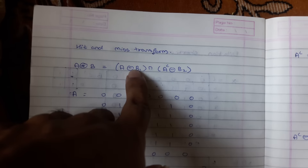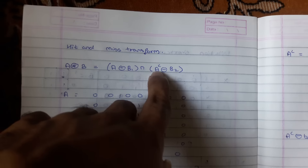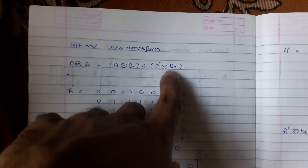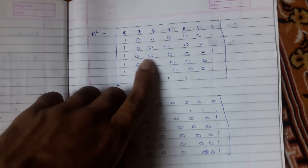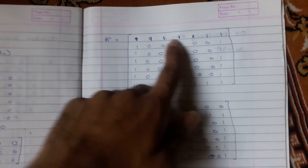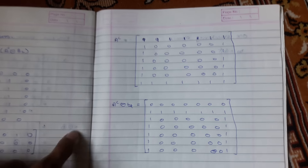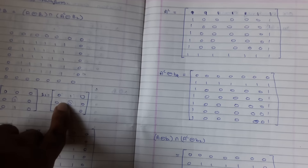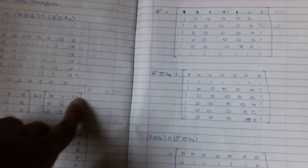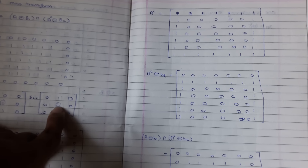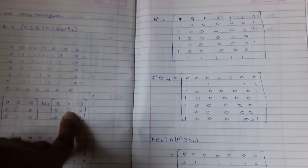This is the output of A erosion with B1. Now, according to the formula, the remaining part is the complement of A eroded with B2. The complement of A simply replaces 0s with 1s and 1s with 0s. Now B2 is given with its seed point at the center element.